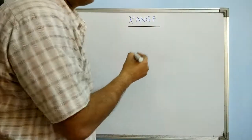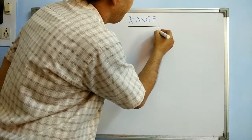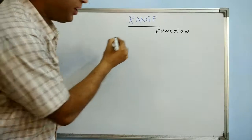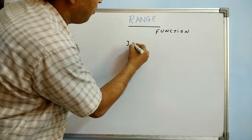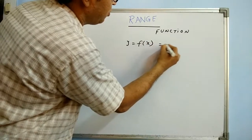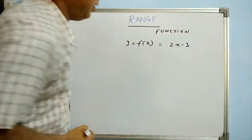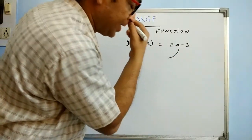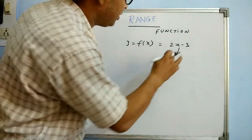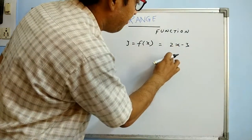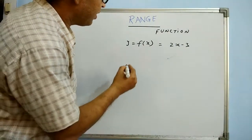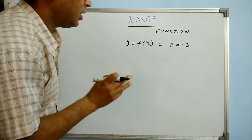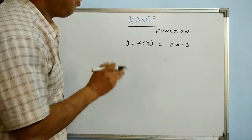Let's look at the range of a function. We know that a function is represented as y or f(x) equal to something — for example, 2x minus 3. Whatever values of x it can take is the domain of the function, which we have already studied. But what outcome it gives is the range of the function.